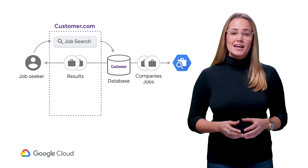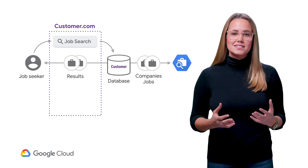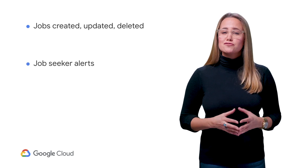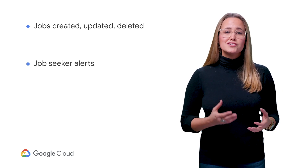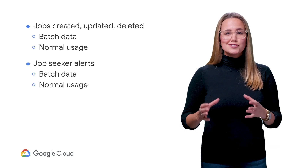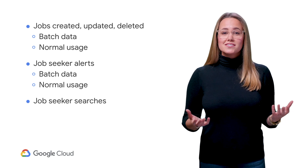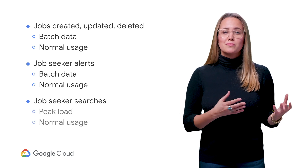When uploading the data to the API, it's important to consider your capacity needs. Capacity planning makes sure the API can provide the appropriate support for all of the daily operations, such as adding and deleting jobs and companies. Here are some factors to consider when looking at capacity: How frequently are jobs created, updated, and deleted? How often do job seekers receive alerts? For both of these, you'll need to estimate the capacity for batch data loads as well as normal daily usage. How frequently are job seekers doing searches? Capacity here should be measured for peak and daily usage.